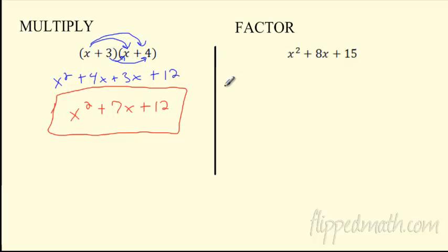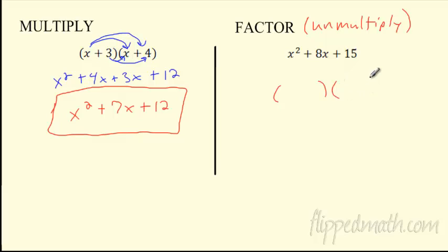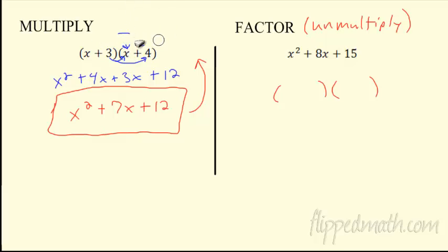Now I want to give you that trinomial and have you go back to those two binomials — unfactor it. Remember, factoring just means to un-multiply. I'm looking for what two sets of parentheses will give me that. We're going to do this backwards. We're going to un-double distribute.